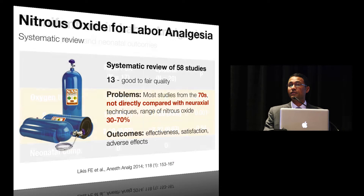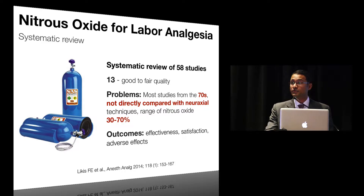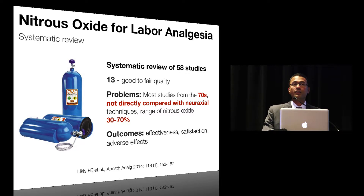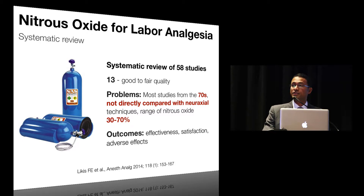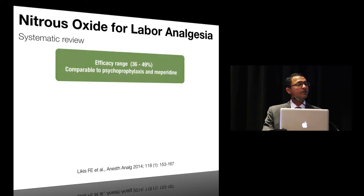Moving on to nitrous oxide for labor analgesia, there are no good quality studies in this topic. I'd like to highlight a systematic review published in Anesthesia and Analgesia, out of which 58 studies were included, but only two were of good quality. The problems with the majority were that they're from the 1970s and did not directly compare nitrous oxide with neuraxial techniques. They also used a wide range of nitrous oxide concentrations from 30 to up to 70%. The outcomes looked for were effectiveness, maternal satisfaction scores, and adverse effects.